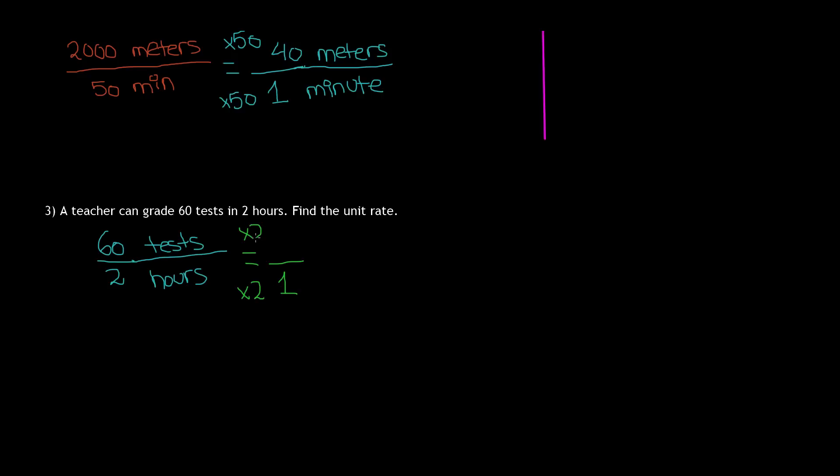So what number times 2 gives us 60? Well, if we divide 60 by 2, we are left with 30. And if we include our units, it is 30 tests in 1 hour. That means it takes the teacher 1 hour to grade 30 tests, or that the teacher can grade 30 tests in 1 hour.